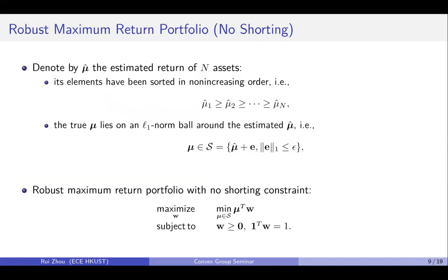Now let's see how to do that. The secret is the robust portfolio optimization. Denoted by mu hat as the estimated return of n assets, and we first sort all the elements in mu hat in non-increasing order. We assume the true mean vector lies on an L1 norm ball around the estimated return.